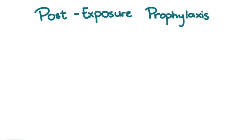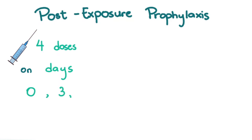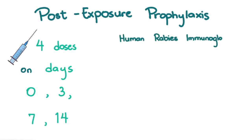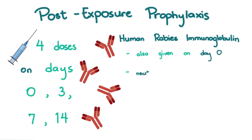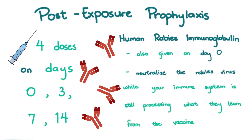Post-exposure prophylaxis is given after being bitten. Four doses of the vaccine are given on days 0, 3, 7, and 14 — day 0 being the day of the bite or as soon as you see your physician. Human rabies immunoglobulin is also given on day 0. These are antibodies that neutralize the rabies virus while your immune system is still processing what it learned from the vaccine. Eventually, your body will be able to create its own antibodies to neutralize the virus as you finish your vaccination.